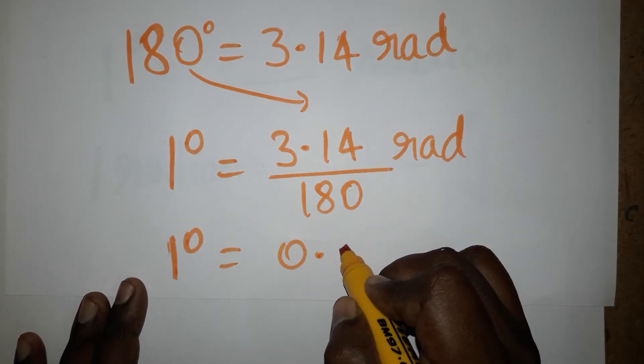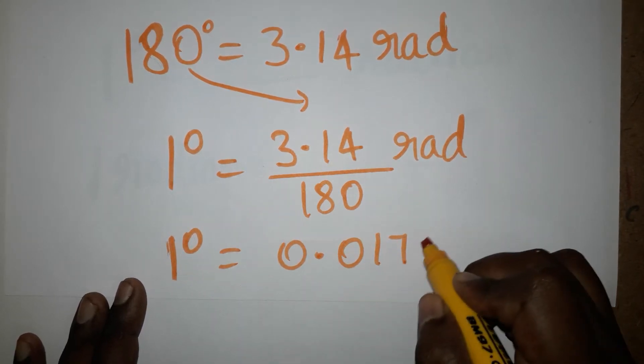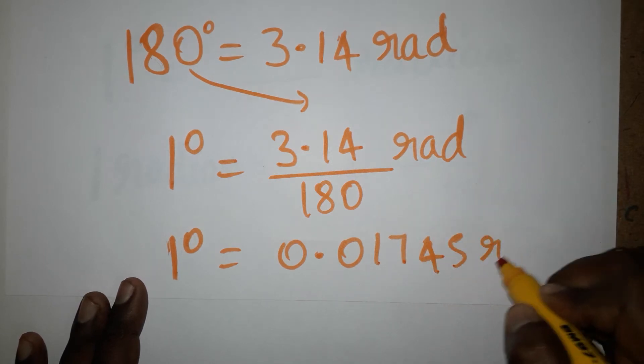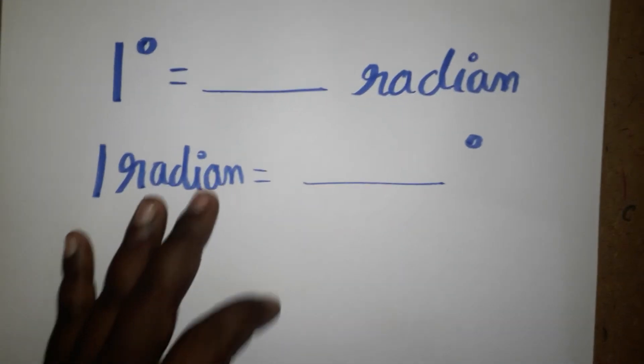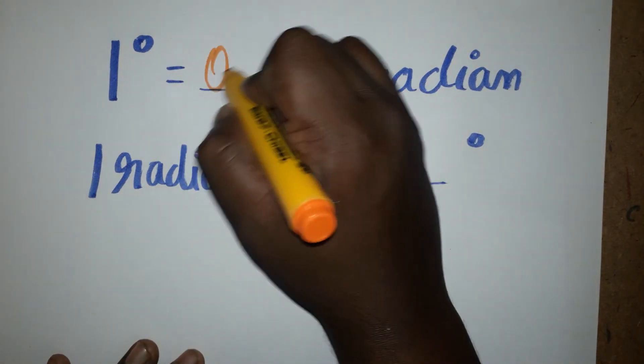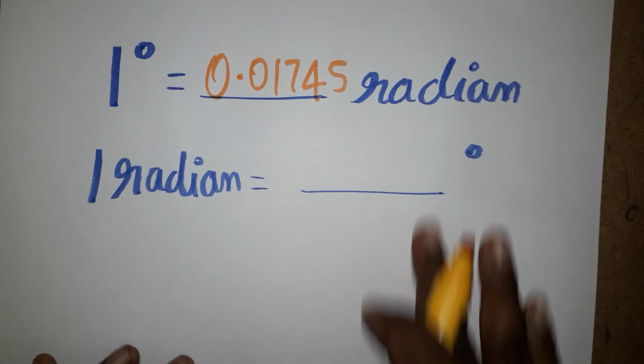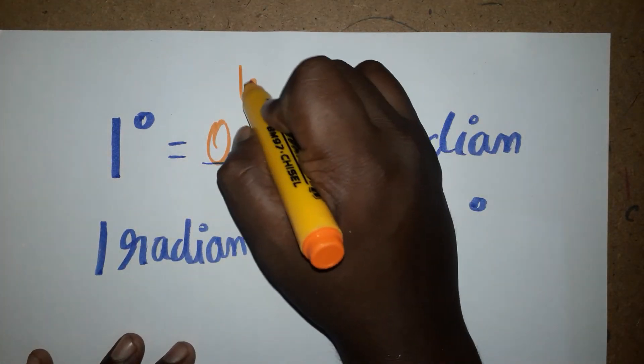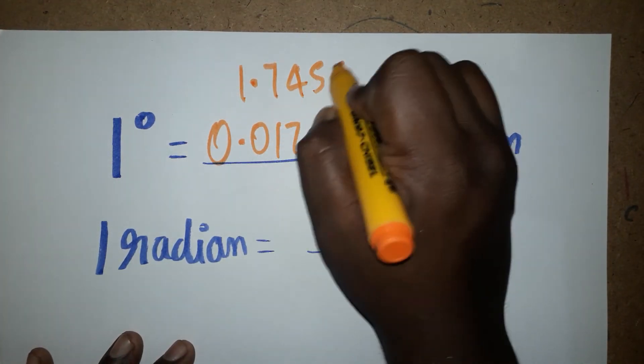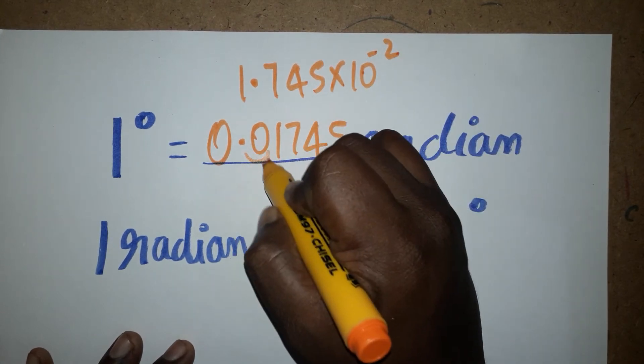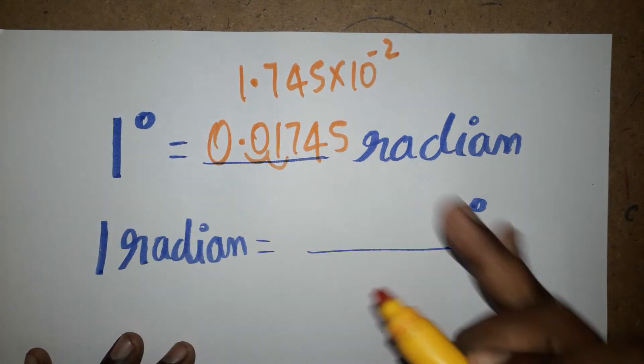Finally, we got 1 degree as 0.01745 radians. Otherwise, you can write the same value as 1.745 × 10^-2, because you can move the decimal two places to the right.